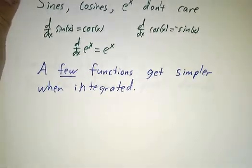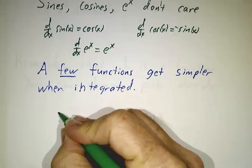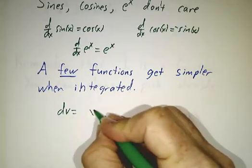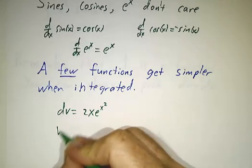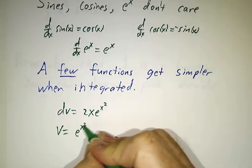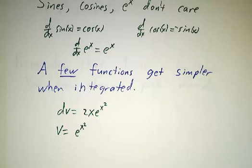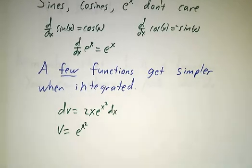And then every once in a while, you find a function that actually gets simpler when it gets integrated. So for example, if you had 2x e to the x squared, then you would say v is e to the x squared, and e to the x squared is simpler than 2x e to the x squared.